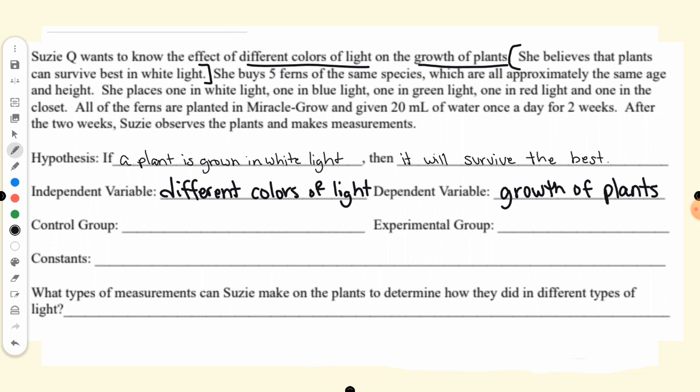She manipulates the different colors of light and she's measuring the growth of plants. Her control group is going to be a group of plants that she does not apply the independent variable to — that she does not manipulate the lights. She has one in white light, one in blue light, one in green light, one in red light, and one in the closet, meaning it is exposed to no light. So the control group would be the plant in the closet — the plant with no light. It does not get the independent variable.